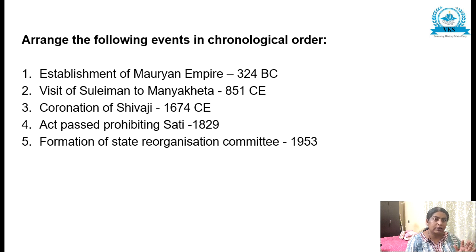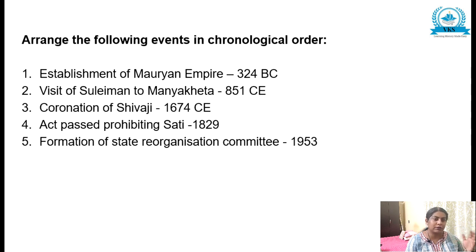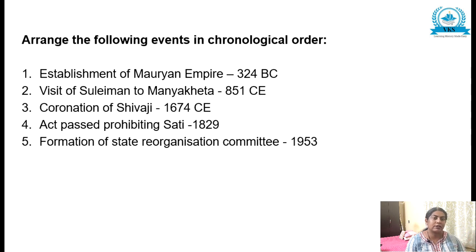The years I have given are just for your understanding — you need not write the years; you just have to arrange the events in the proper order. First the Mauryan Empire was established around 324 BC, then the visit of Suleiman to Manyaketa in the 851 CE era, then coronation of Shivaji 1674 CE, Act passed prohibiting Sati 1829, and formation of the State Reorganization Committee 1953.